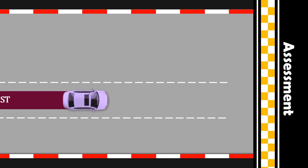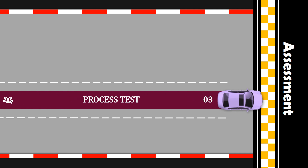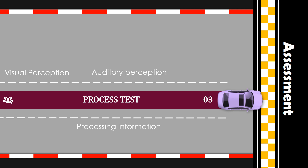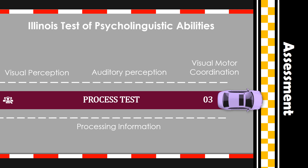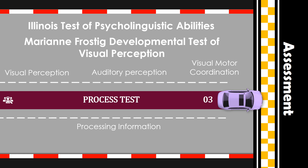Number three is process test. One area of difficulty that students with learning disabilities experience is in processing information. The specific perceptual problems are in visual perception, auditory perception, and visual-motor coordination. Two widely used American process tests are the Illinois Test of Psycholinguistic Abilities and the Marianne Frostig Developmental Test of Visual Perception.